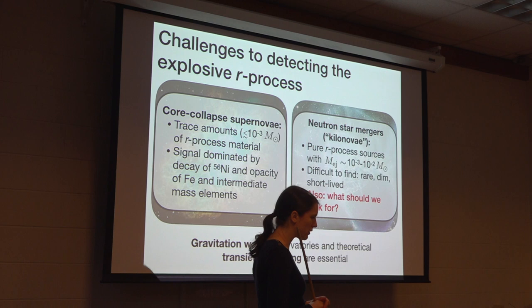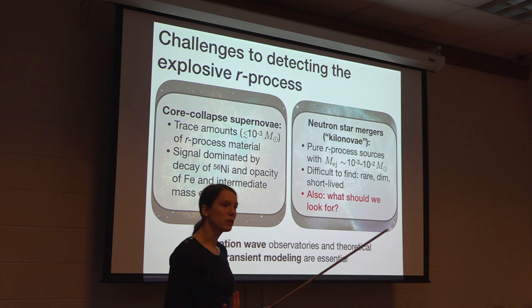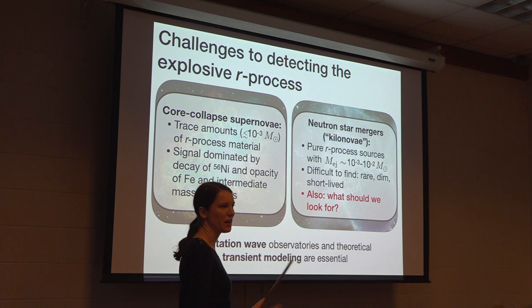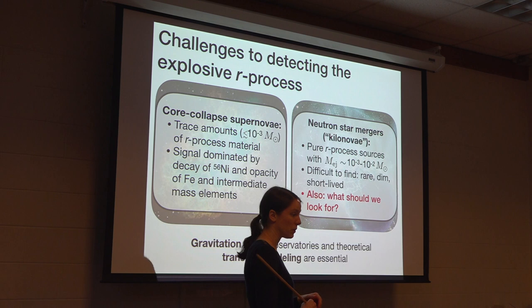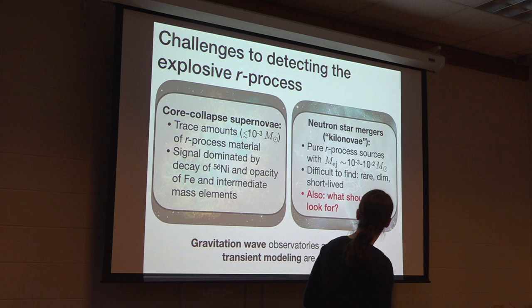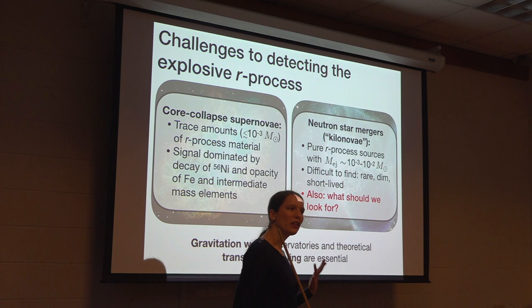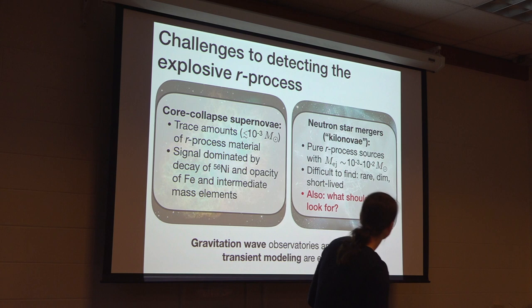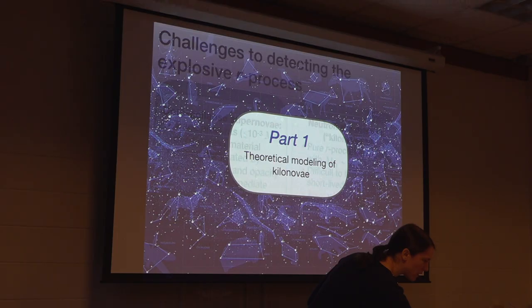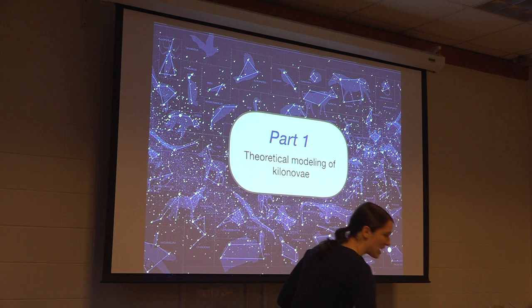It was tricky to come up with a smoking gun for the presence of R-process elements in a supernova signal. That certainly wasn't the case for neutron star mergers and their associated electromagnetic transients, which are called kilonova. These are essentially pure R-process sources — any material ejected is expected to burn to the R-process, giving a big expanding cloud of these elements. The challenge is the scarcity of events, and they're also intrinsically dimmer and shorter-lived than many other astrophysical transients. We need good theoretical models to guide observational efforts and interpret their emission.